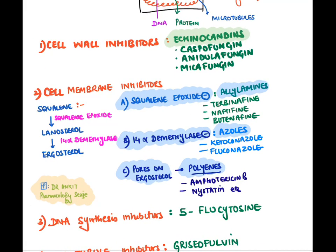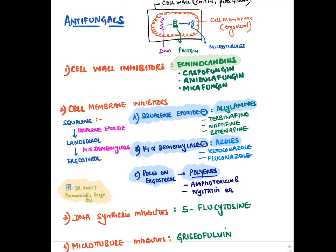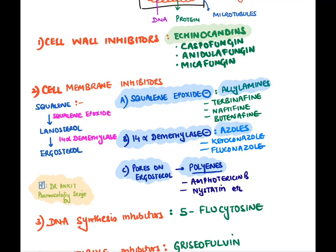Cell membrane inhibitors target ergosterol. The membrane is synthesized from squalene. First, squalene is converted into lanosterol by the enzyme squalene epoxide — inhibited by allylamines: terbinafine, naftifine, and butenafine. Then lanosterol is converted into ergosterol by 14-alpha demethylase — inhibited by azoles like ketoconazole and fluconazole.